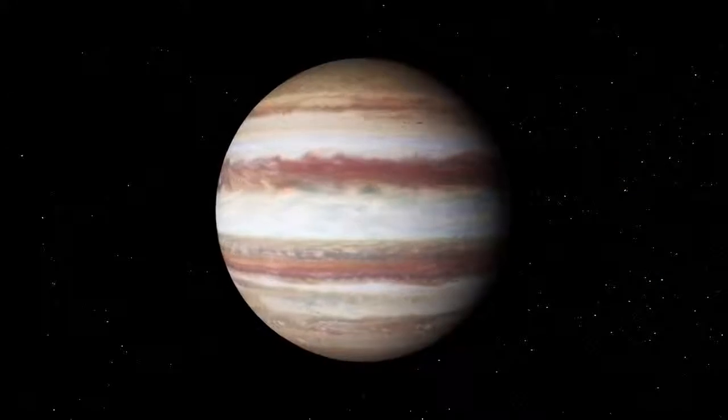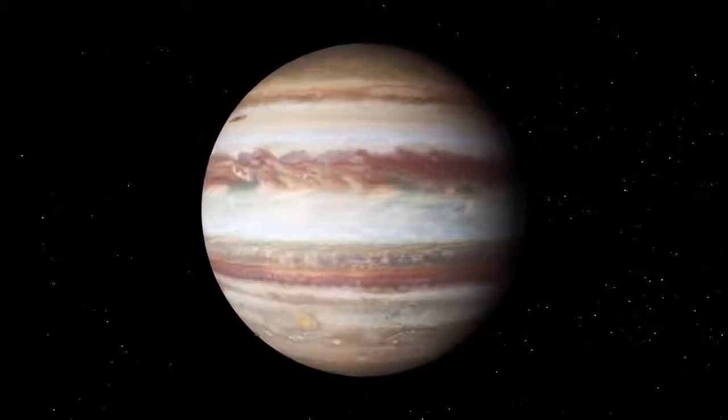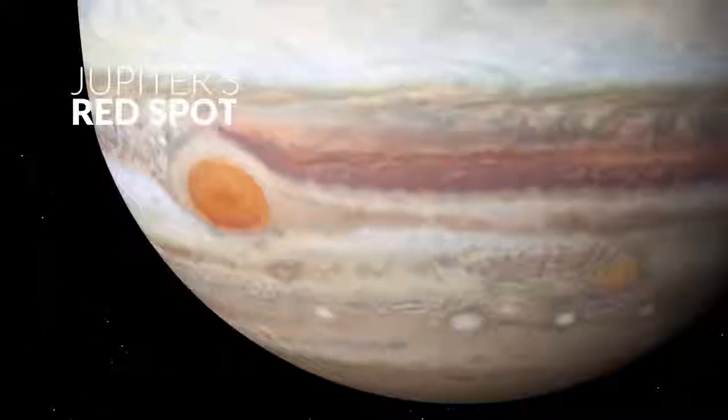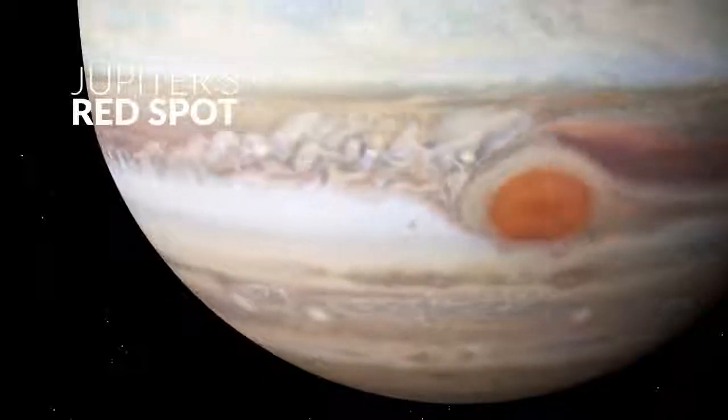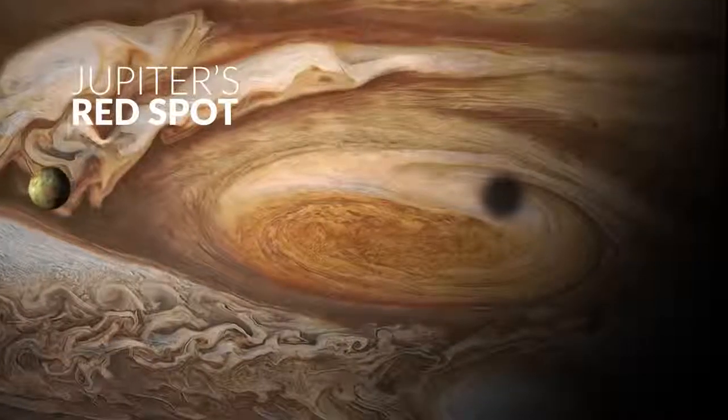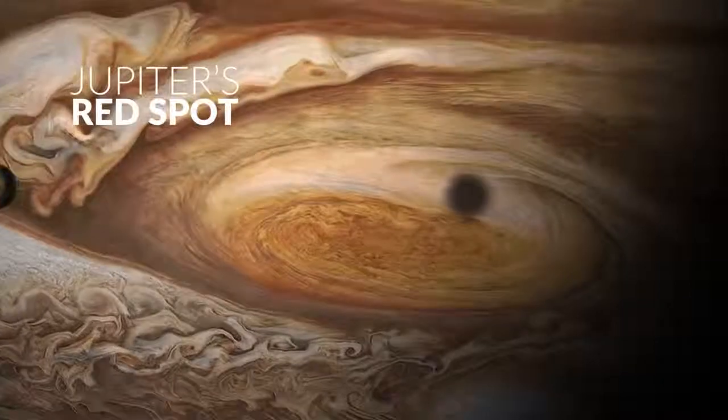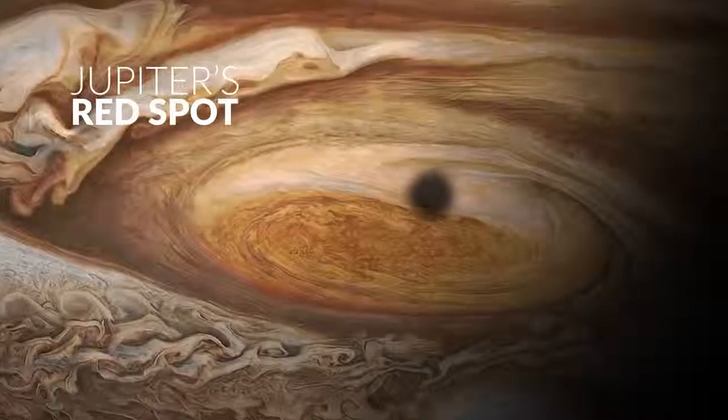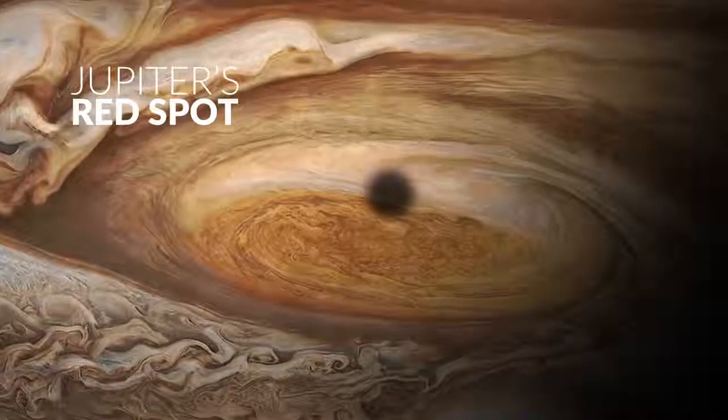Probably the most recognizable and fascinating feature on Jupiter is its Great Red Spot. Named for its appearance, this giant oval-shaped storm in Jupiter's atmosphere has existed as far back in time as telescopes have been able to observe it.